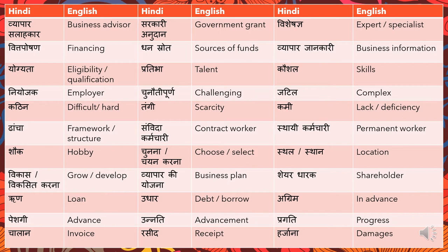'Yogyata' can be translated as either 'eligibility' or 'qualification' depending on the context. If the dialogue asks 'what is your qualification,' you would say 'aapki yogyata kya hai.' If it says 'let's find out if you are eligible for something,' you would say 'chaliye hum dekhte hai ki kya aap iske yogyata hai.' 'Pratibha' is 'talent,' 'kaushal' is 'skills,' and 'niyojak' is 'employer.'